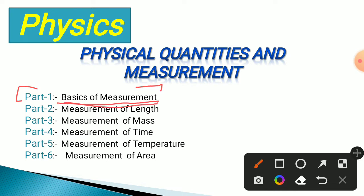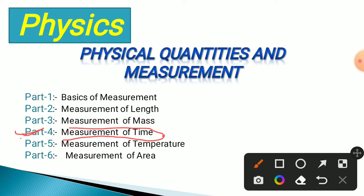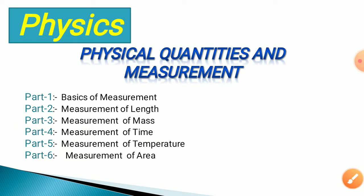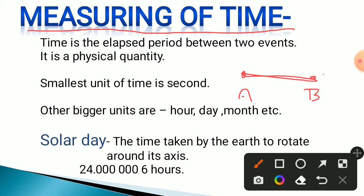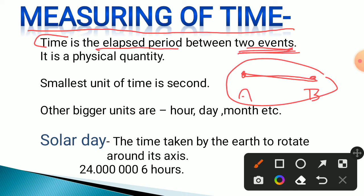Part 4 covers measurement of time. We will cover time-related topics one by one: what is time, how can we measure time, and what are the instruments to measure time. Time is the elapsed period between two events — Event A and Event B. The elapsed period which passes between two events is what we call time.